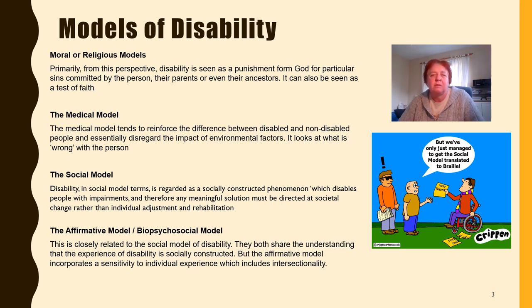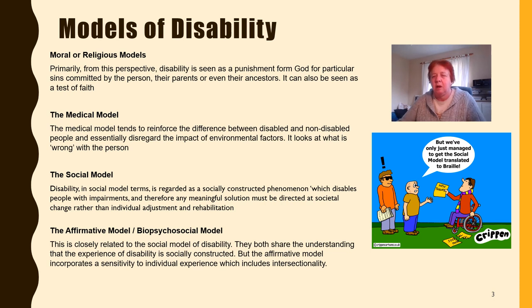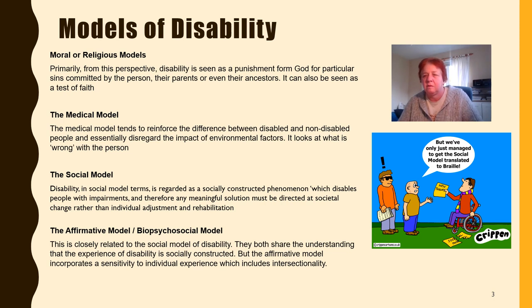The latest development of some of these models is called the affirmative model, biopsychosocial model, or identity model of disability — very closely related to the social model, but it shares the understanding that the experience of disability is socially constructed while incorporating a sensitivity to individual experience including intersectionality. Intersectionality is really important. It's looking at the whole person — how they react depends on lots of things: their education, their upbringing, their culture, their financial status in society. So it's really important that we consider the whole person rather than just a single aspect of their disability.